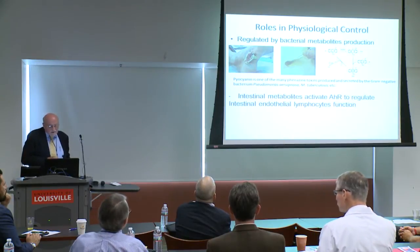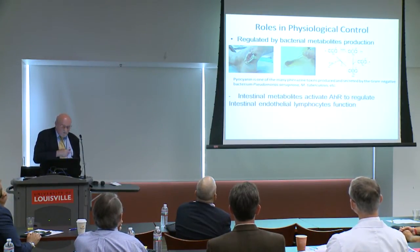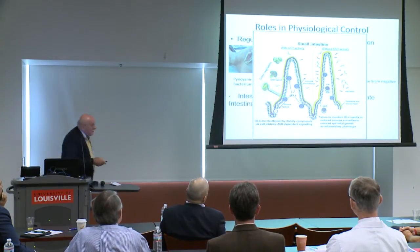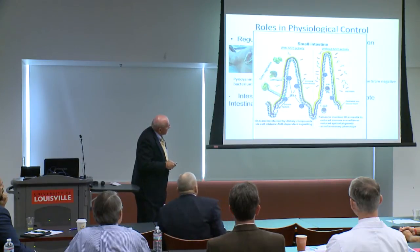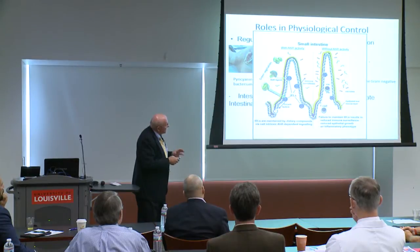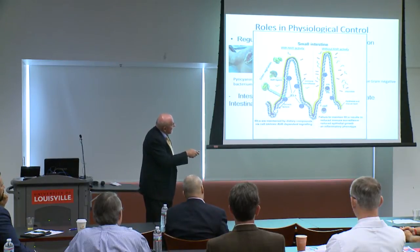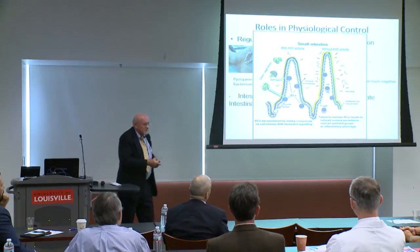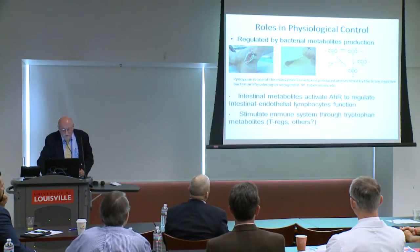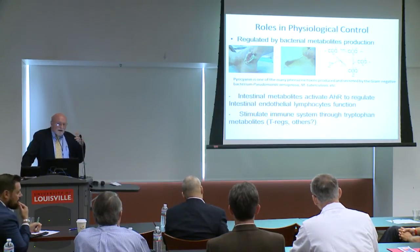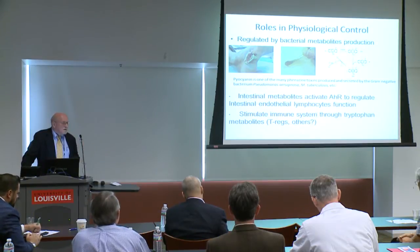In addition, intestinal metabolites from bacteria have been shown to activate the AHR, and they appear to regulate intestinal endothelial lymphocytes. With AH activity, the bacterial metabolites activate the AH receptor, which mobilizes or potentiates the function of leukocytes and causes a more regulated bacterial membrane, preventing polysaccharides from entering the cell. In the absence of the AH receptor, those materials can penetrate and go into the bloodstream. The AH receptor is also shown, through tryptophan metabolites like kynurenine, to regulate the immune system and potentiate T regulatory cells.